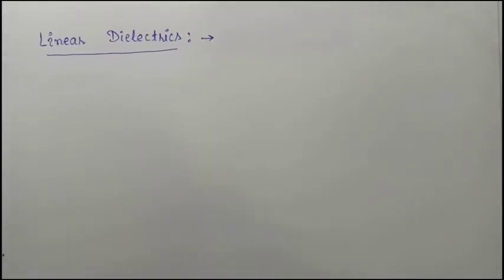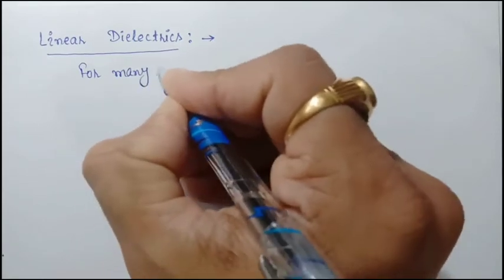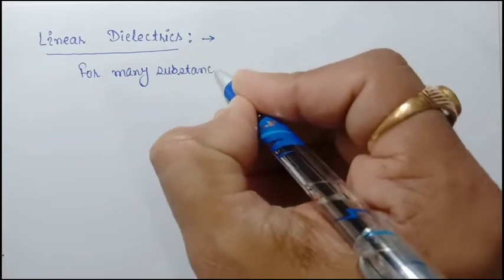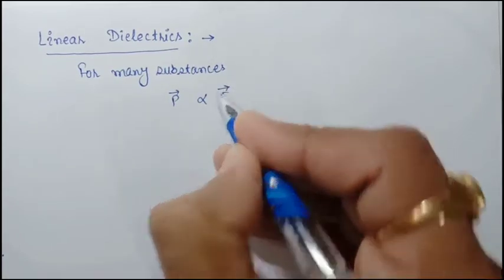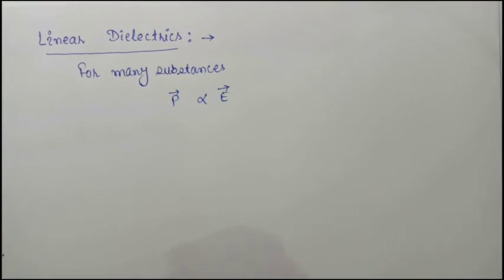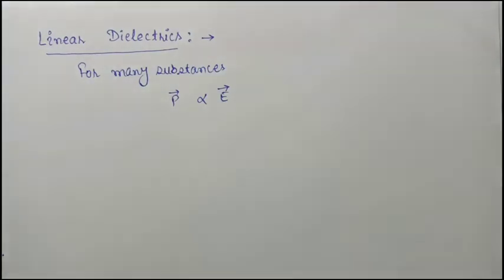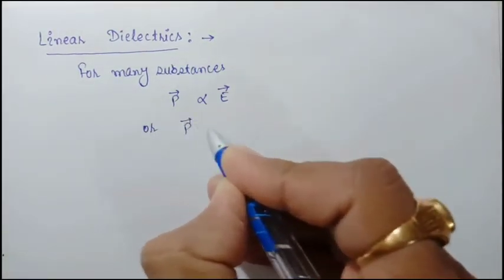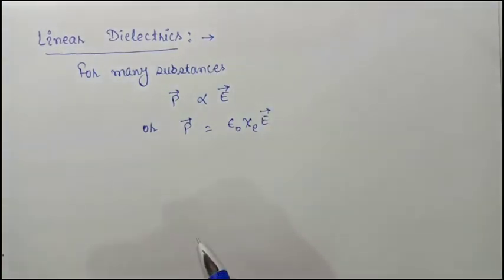Hello everyone. In this lecture we will discuss linear dielectrics. For many substances, the polarization is directly proportional to the electric field, provided E is not so strong. That is, with the increase of electric field polarization increases, and with the decrease of electric field polarization decreases. We can write P = ε₀ χₑ E.